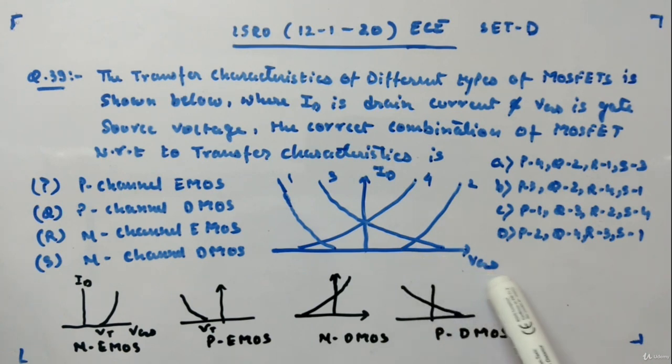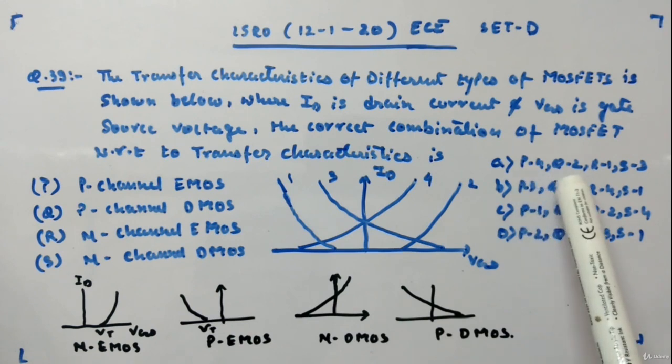VGS ID: fourth, third, second, first. You have to match 1, 2, 3, 4 with PQRS.